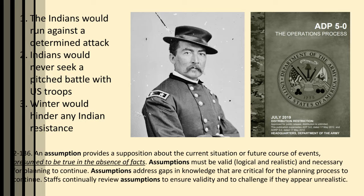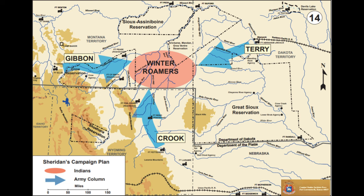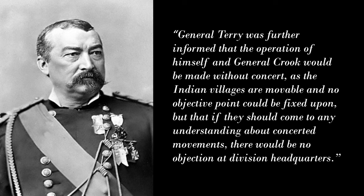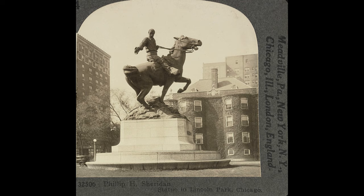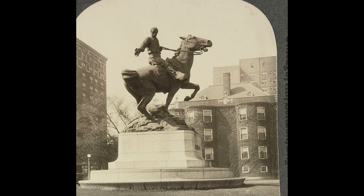Sheridan's orders specified winter operations, but the instructions to the two department commanders identified no overall commander for the operation, nor did the orders spell out coordinating instructions between the two. Sheridan's own words betray the hands-off approach he took to operations in the field: "General Terry was further informed that the operation of himself and General Crook would be made without concert, as the Indian villages are movable and no objective point could be fixed upon, but that if they should come to any understanding about concerted movements, there would be no objection at division headquarters." Sheridan's disregard for coordination between his separate columns indicates his contempt for the fighting capabilities of the Sioux — a contempt that would lead to ineffective combat operations throughout the winter and well into the summer of 1876.